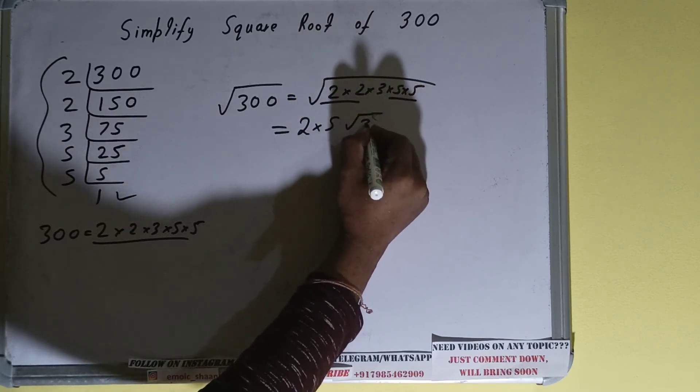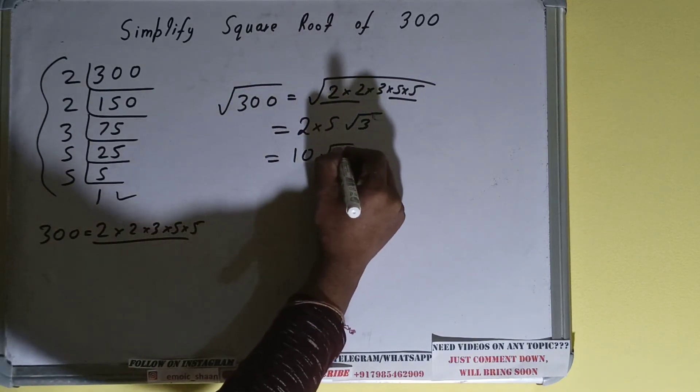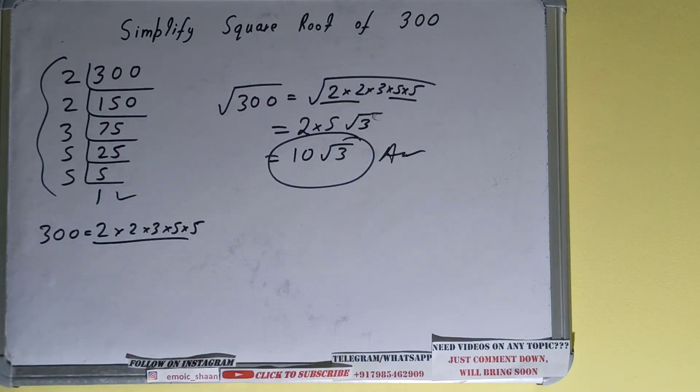After multiplying it will be 10√3. That will be your answer, or you can say simplified square root of 300 will be 10√3.